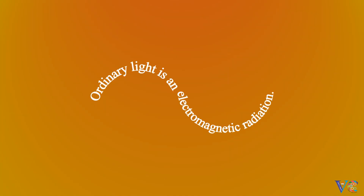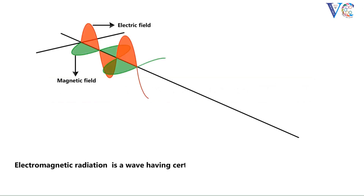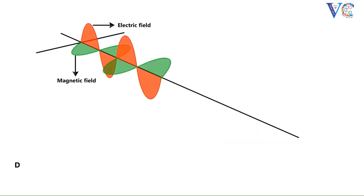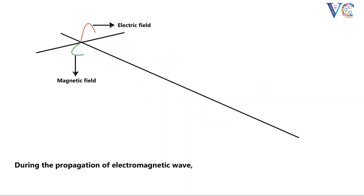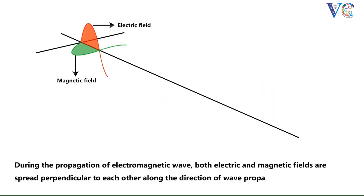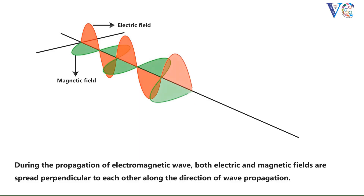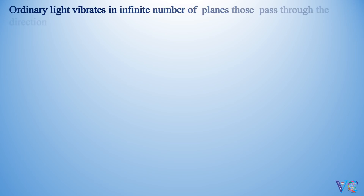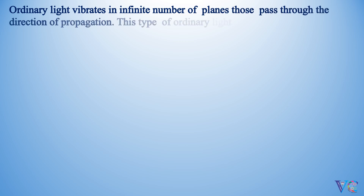Ordinary light is an electromagnetic radiation. Electromagnetic radiation is a wave having a certain amount of energy which is propagated through free space or through a material medium. During propagation, both electric and magnetic fields spread perpendicular to each other along the direction of wave propagation. Ordinary light vibrates in an infinite number of planes passing through the direction of propagation. This type of ordinary light is unpolarized light.